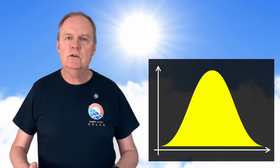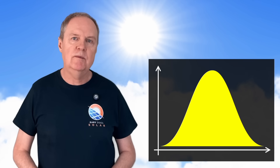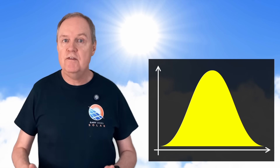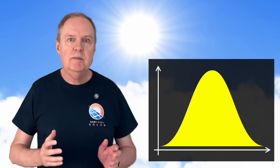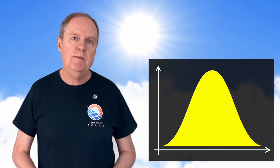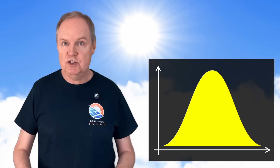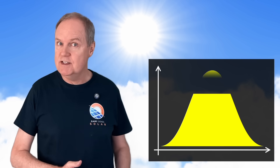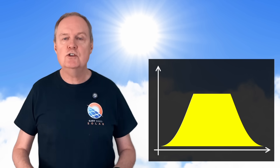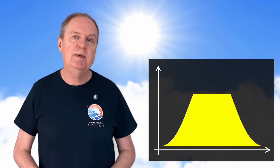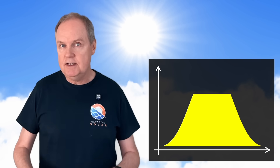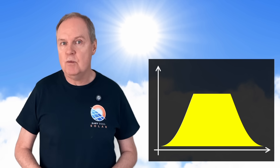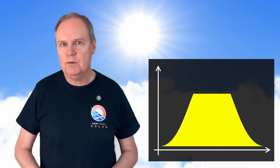On a very sunny day your solar generation chart might show a perfect bell curve like this, but depending on what equipment you have the chart might look like this instead. Essentially your solar generation is being clipped in the middle of the day, and in this video I'll explain why that's happening and what you can do about it.